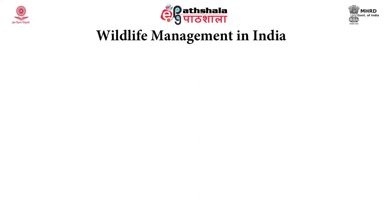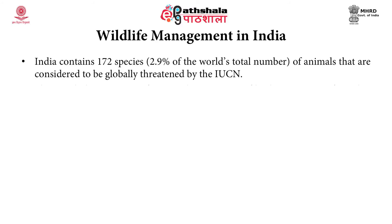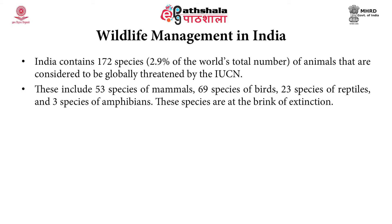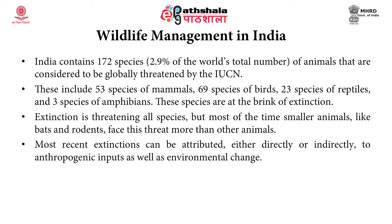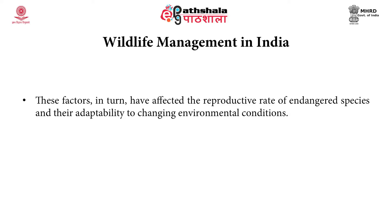Now coming to wildlife management and India. India contains about 172 species of animals that are considered to be globally threatened by IUCN. This constitutes about 2.9 percent of the world's total number and includes about 53 species of mammals, 69 species of birds, 23 species of reptiles, and 3 species of amphibians. Extinction is threatening almost all species, but most of the time smaller animals such as bats and rodents face this threat more than other animals. Most recent extinctions can be attributed either directly or indirectly to anthropogenic inputs as well as environmental change, affecting the reproductive rate of endangered species and their adaptability to changing environmental conditions.